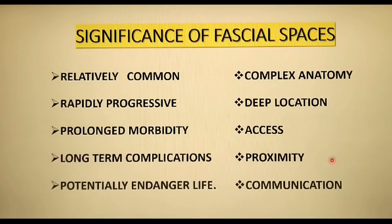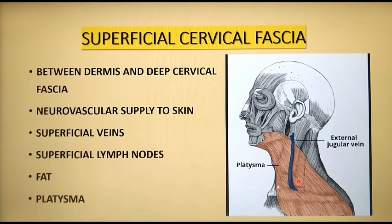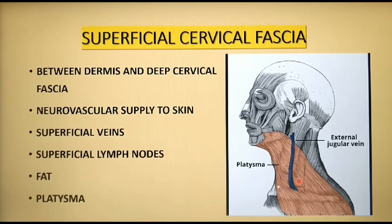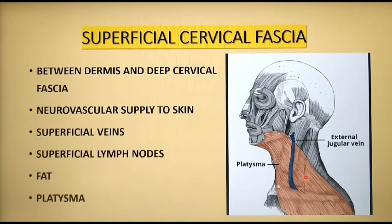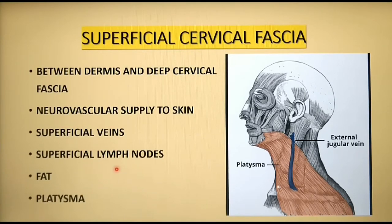Let's have a look at the cervical fascia in detail. Cervical fascia is divided into superficial cervical fascia and deep cervical fascia. Superficial cervical fascia is a thin layer of subcutaneous connective tissue that lies between the dermis of the skin and the first layer of deep cervical fascia, which is the investing layer. It contains the neurovascular supply to the skin, superficial veins and lymph nodes, fat, and the platysma muscle.